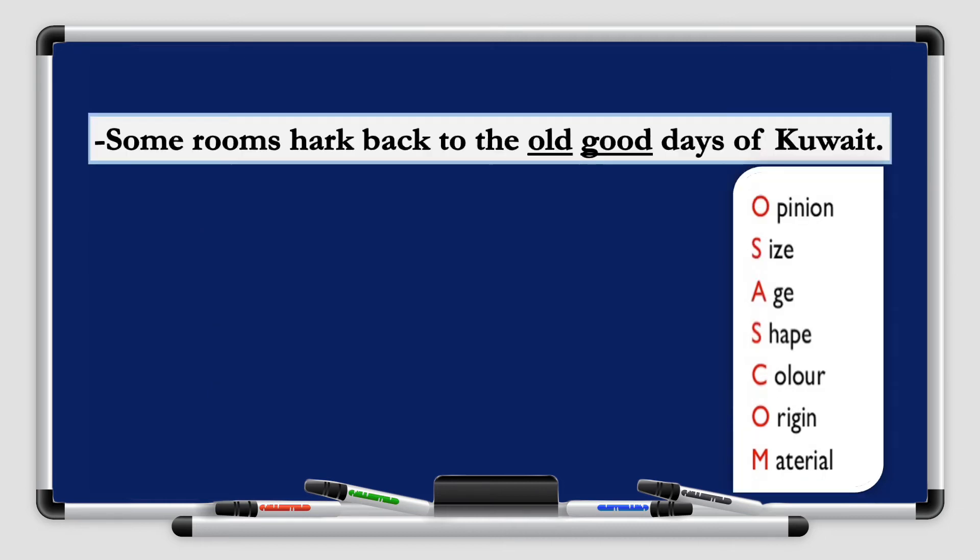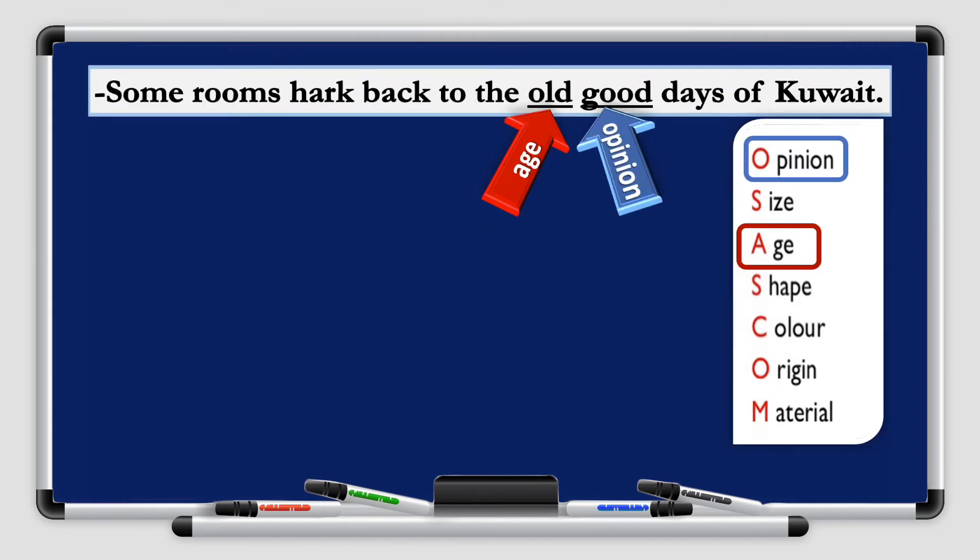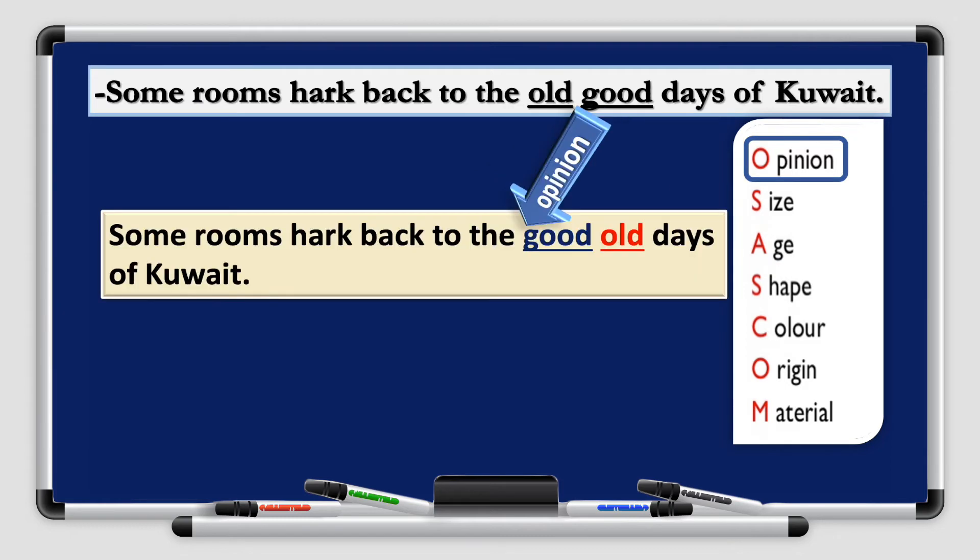Let's take another example. Some rooms hark back to the old good days of Kuwait. Let's identify our adjectives here. We have age, old, and good. What is good? It's an opinion. Are they correct? Are they in order? No. So let's switch then. Some rooms hark back to the good old days of Kuwait. We started with the opinion and followed by the age.